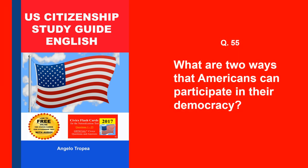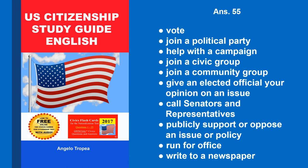What are two ways that Americans can participate in their democracy? Vote. Join a political party. Help with a campaign. Join a civic group. Join a community group. Give an elected official your opinion on an issue. Call senators and representatives. Publicly support or oppose an issue or policy. Run for office. Write to a newspaper.